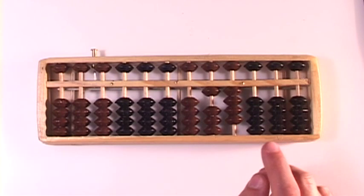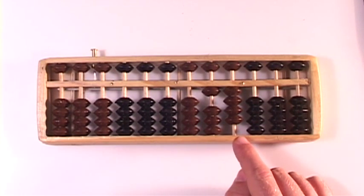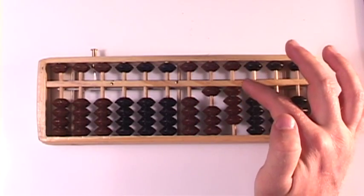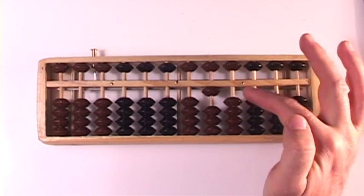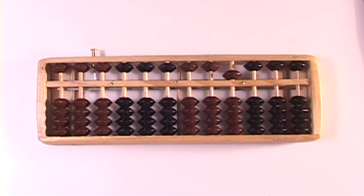So the complement to the number 9 is 1. And 1 with respect to 5 is 4. So what I'm going to do is take all 4 of these away, add that 5, and take that away there. 14 minus 9 is 5.